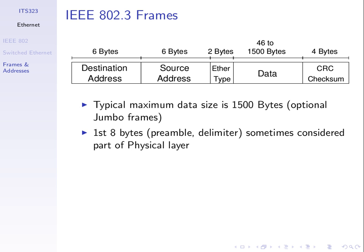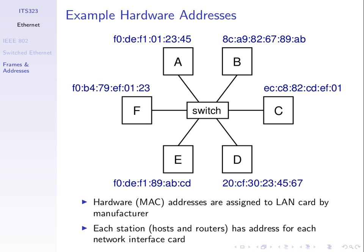Before the midterm, we talked about a parity check — it's a very simple checksum, but there are more complex checksums that allow for error detection. A wants to transmit the frame to D.